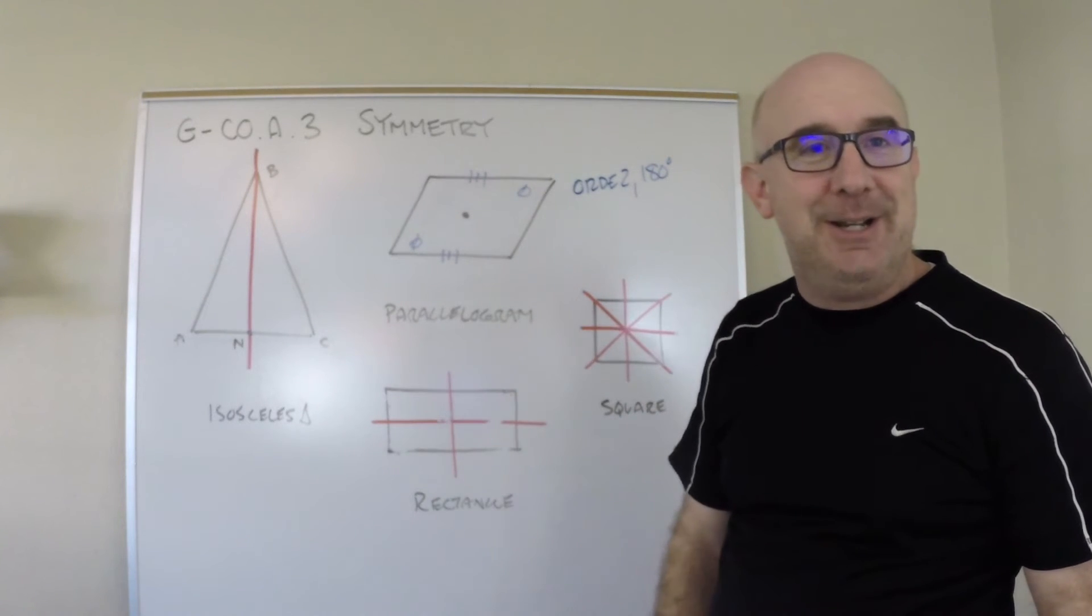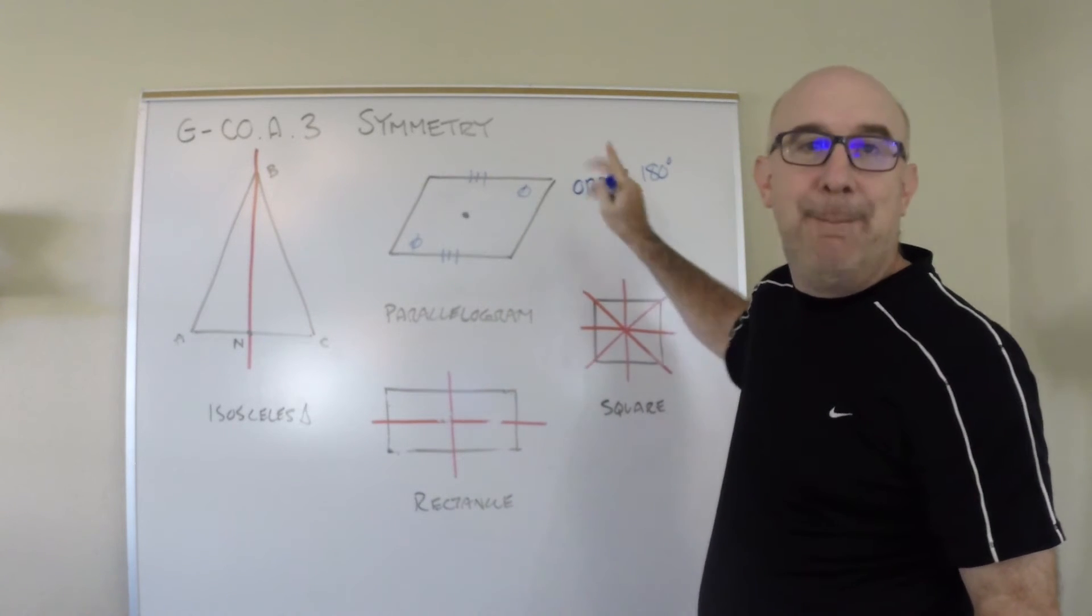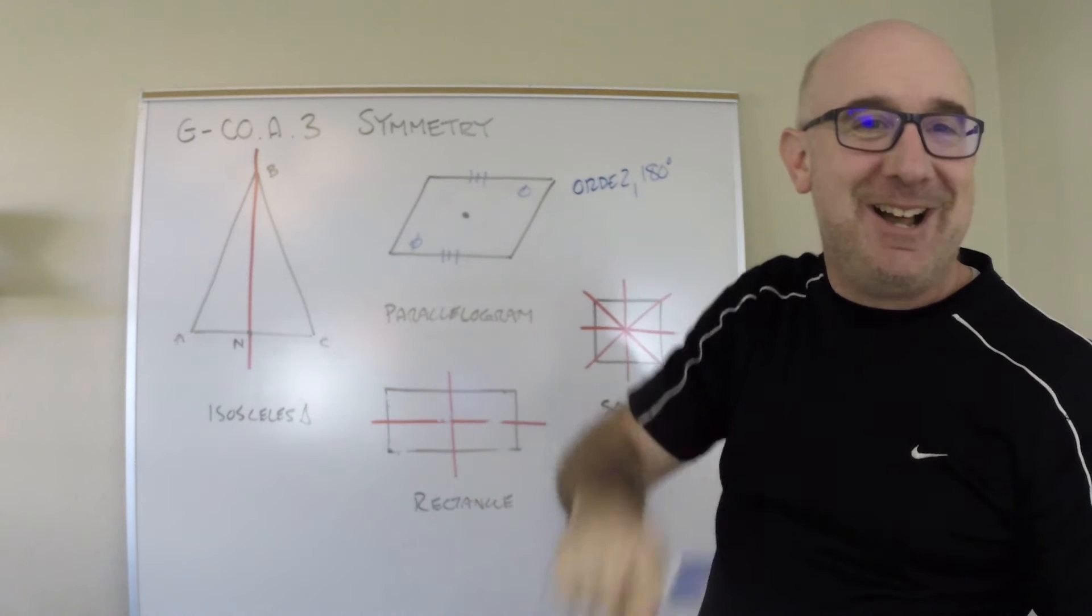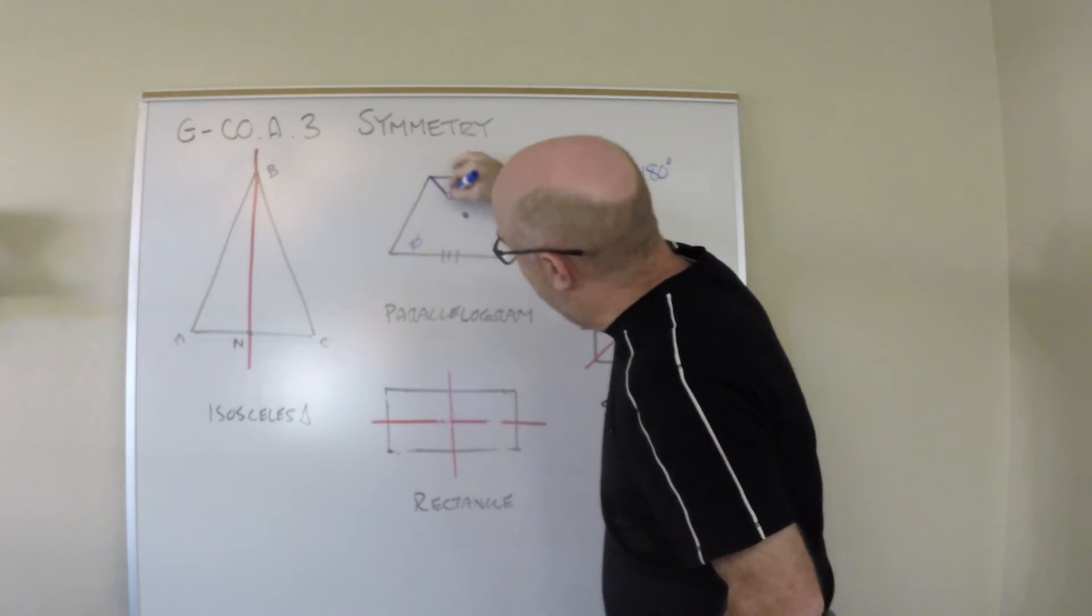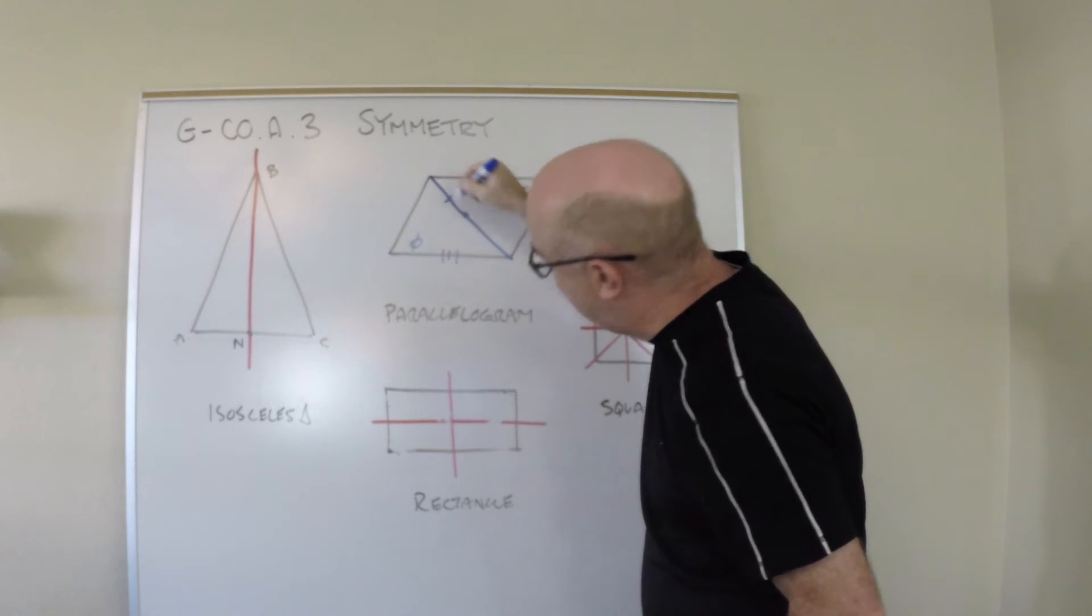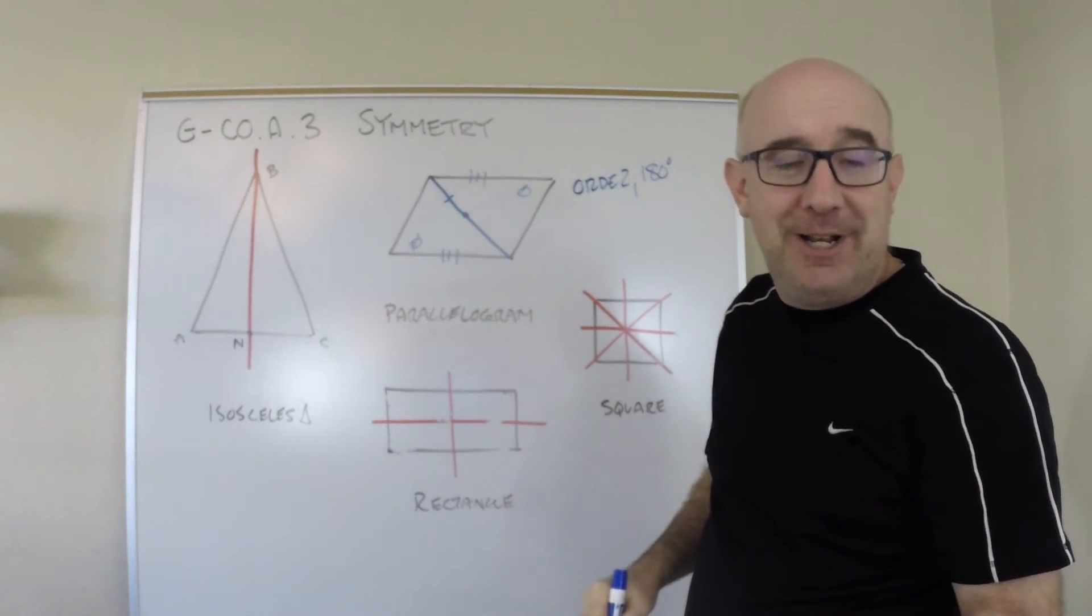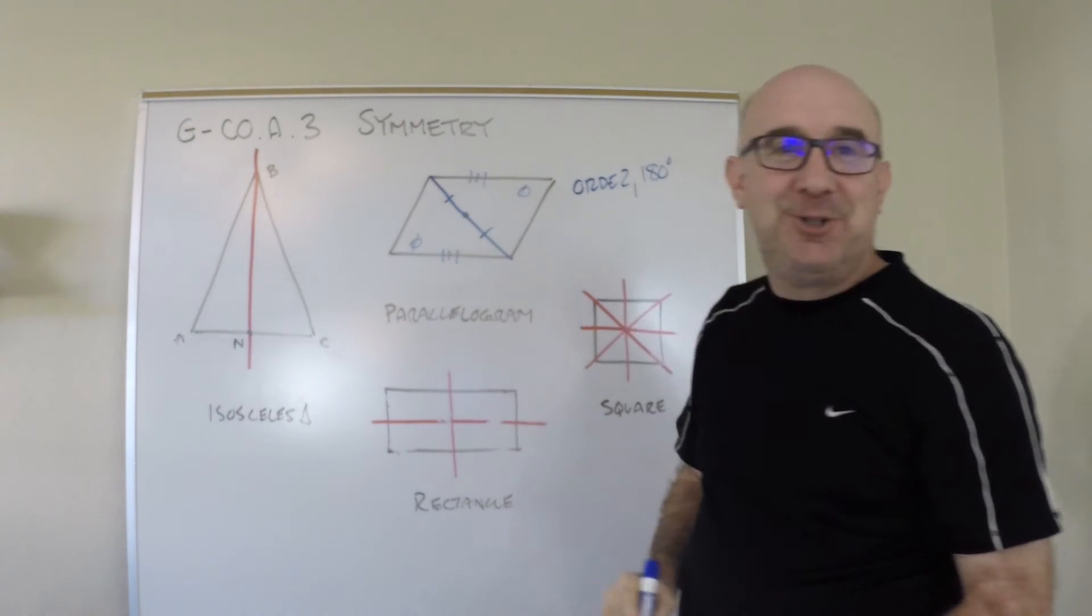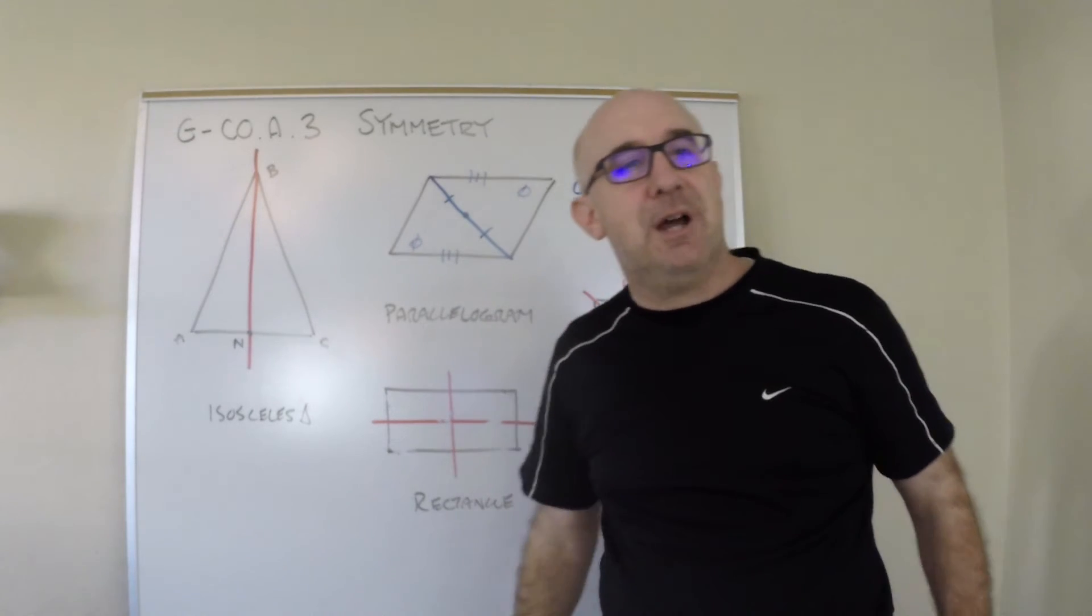We would also know that the diagonals had to bisect each other, because this diagonal in the symmetry of 180 degrees, it would map onto itself. Beautiful, beautiful stuff.